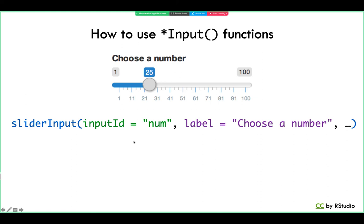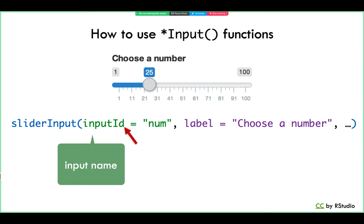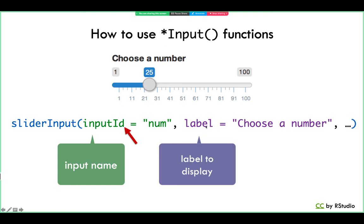Each of the input functions follows the same basic syntax. They take an argument named inputId, which allows you to assign a name to an input — important for connecting it to outputs. You can give your input any name you like, but each input in your app should have its own name. Note that the argument name has a lowercase 'd' on the end, so if you use an uppercase 'D' you'll get an error. The second required argument is the label argument. When users see your input object, like a slider or button, the label explains what it does, and labels appear in an intelligent place near the object. If you don't want a label to appear, just put two quotation marks — an empty character string.